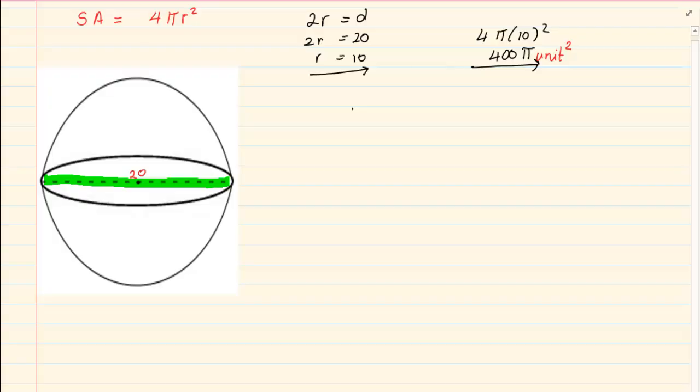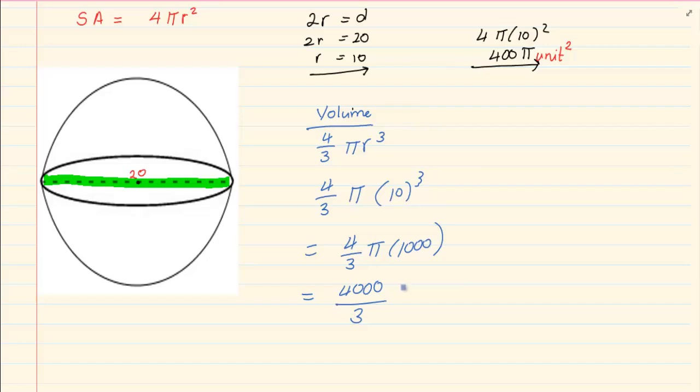Now the volume of a sphere is equal to 4/3 πr³. So we're going to have 4/3 π, our r is 10, cubed, which will equal 4/3 π(1000). You're going to end up at 4000/3 π. Remember they didn't give us the value, so we're going to say units cubed.